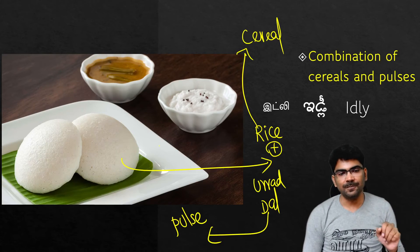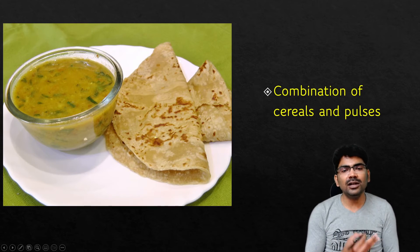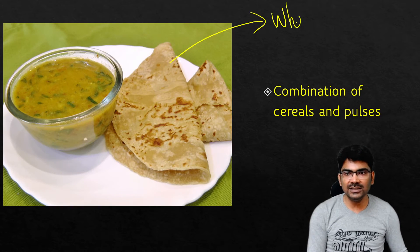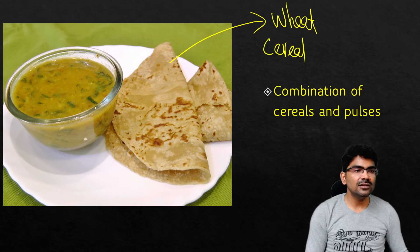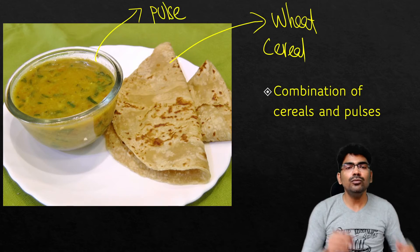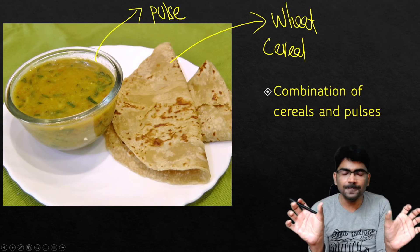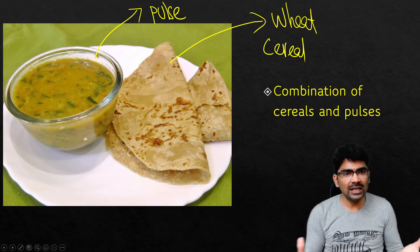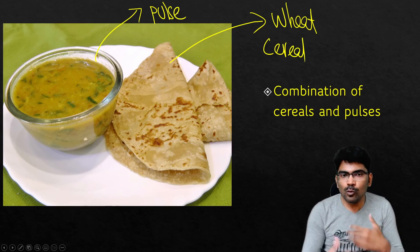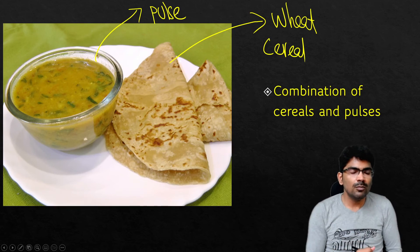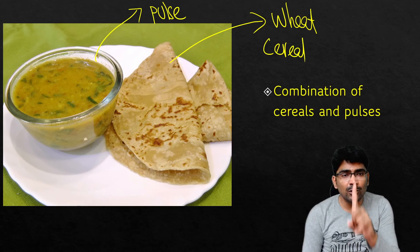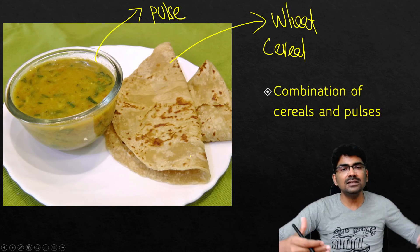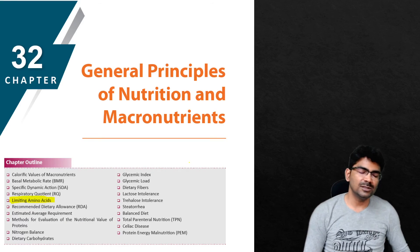In South India, people mostly take idli and dosa. In the northern part of India, people take mainly roti and dal — roti is made from wheat, a cereal, and dal is a pulse. You will find cereal and pulse combinations in most Indian diets and in other countries as well. In the western world, people mostly take non-vegetarian food, so there is no problem of limiting amino acids. The problem of limiting amino acids is found only with vegetarian food, which is why people taking vegetarian protein should combine cereals and pulses to overcome this problem.